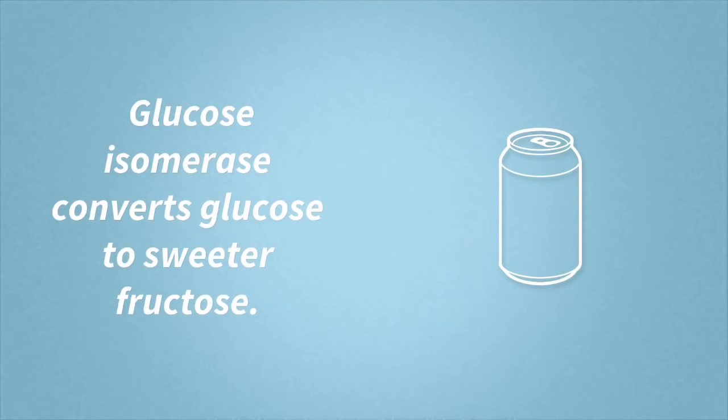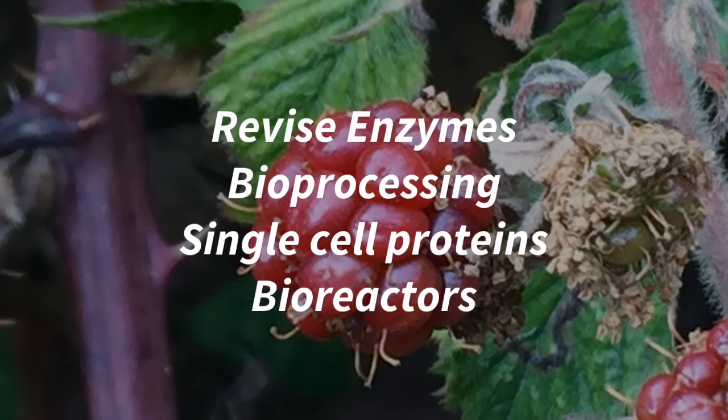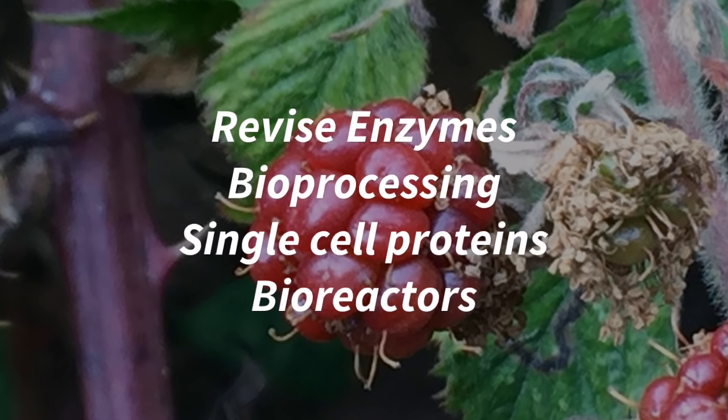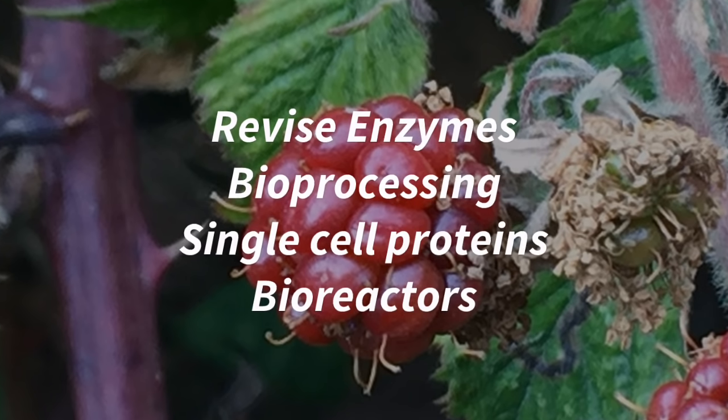Glucose isomerase is used in industry to convert glucose to the sweeter tasting fructose. This avoids having to add more sugar to your product. So that was the practical on enzyme immobilization. It ties in nicely with revising your enzymes, checking out bioprocessing, single cell proteins, and bioreactors. Good luck!